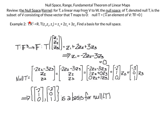We have the example where T is a transformation from R3 to R. It maps a vector (Z1, Z2, Z3) to a real number equal to Z1 plus 2Z2 plus 3Z3. To find the null space, we set the transformation equal to zero, which gives the condition Z1 must equal minus 2Z2 minus 3Z3.